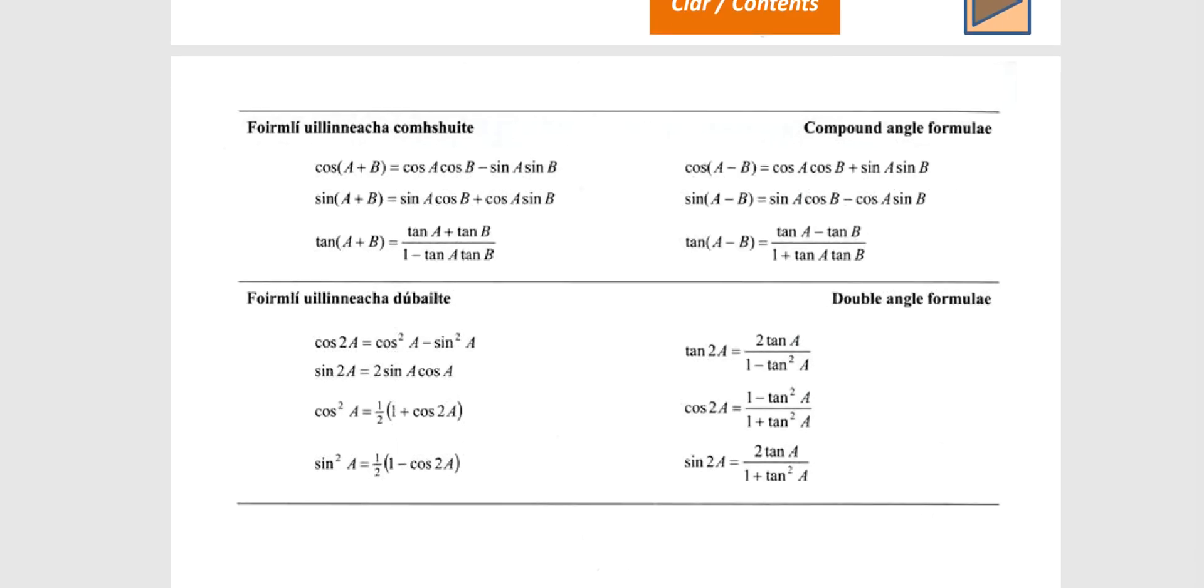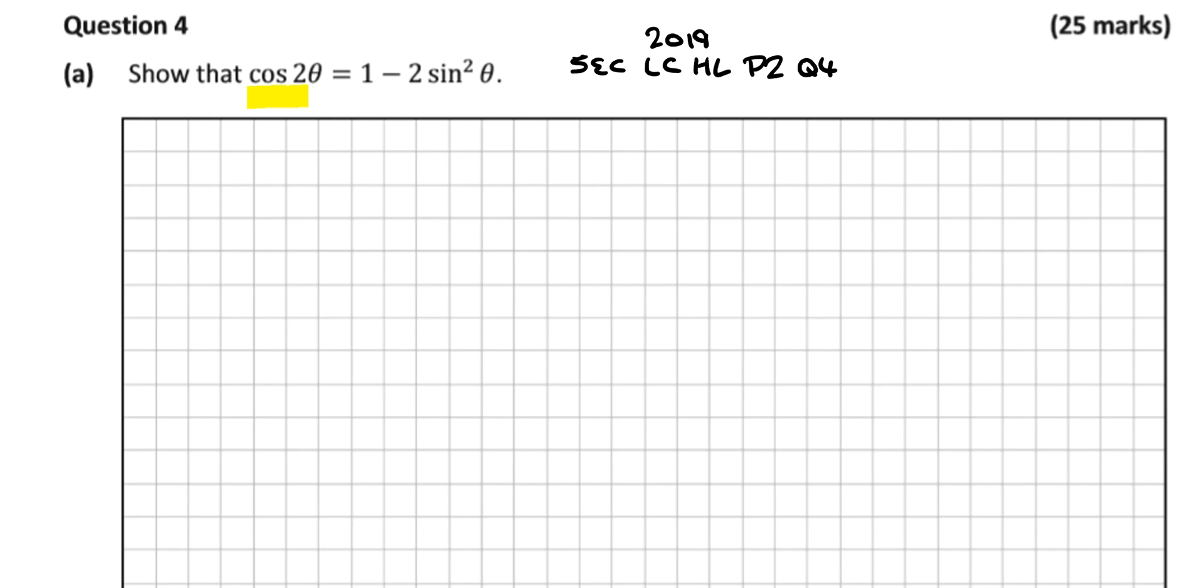Cos 2θ is equal to cos² α but we can exchange the α for θ. So cos 2θ is equal to cos² θ minus sin² α. So cos 2θ is equal to cos² θ minus sin² θ. But that α could be replaced with θ. So we can write this as cos² θ minus sin² θ is equal to 1 minus 2 sin² θ.